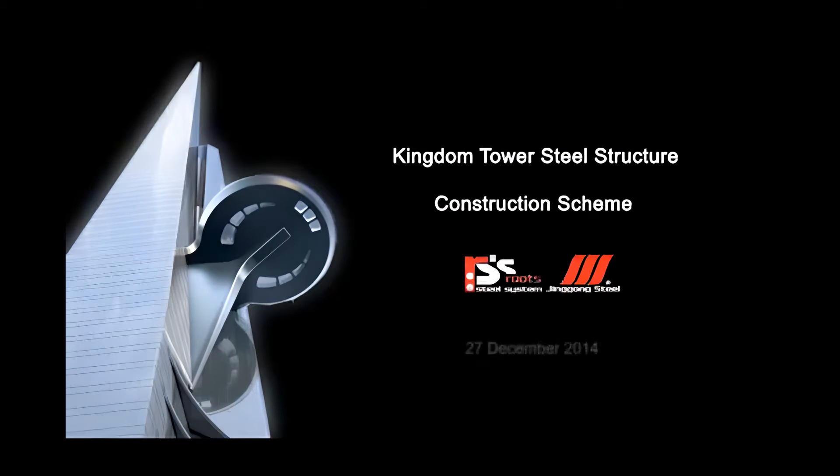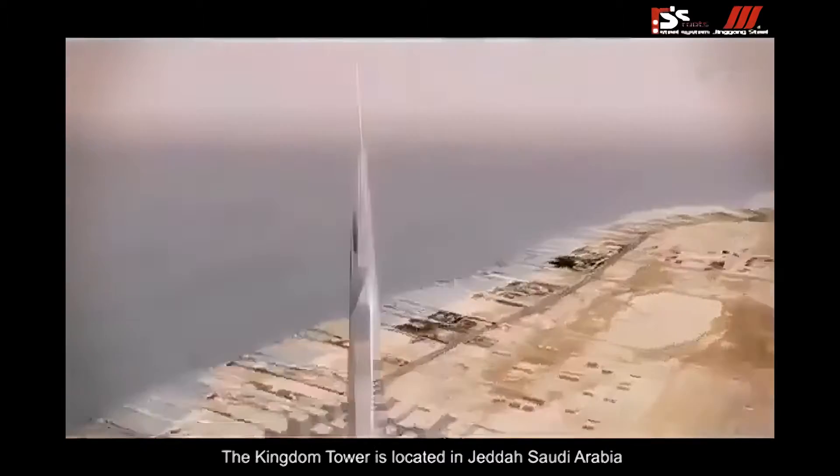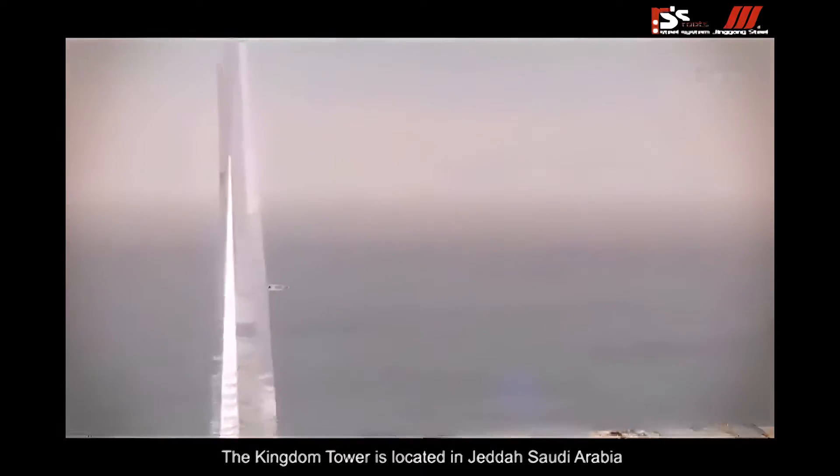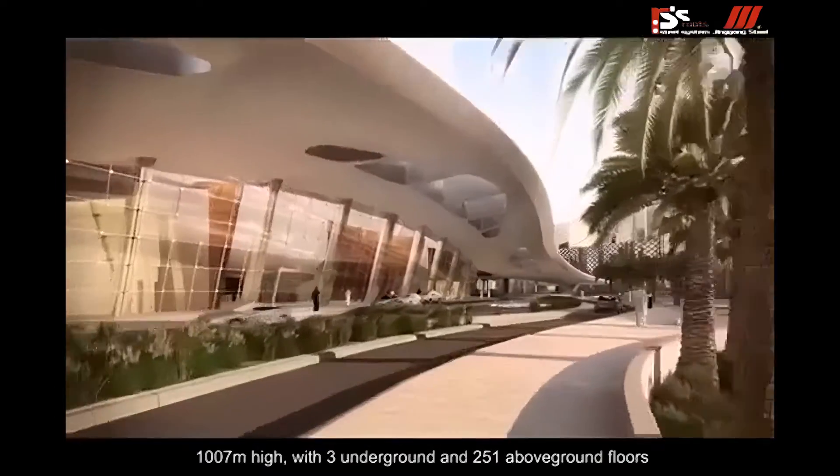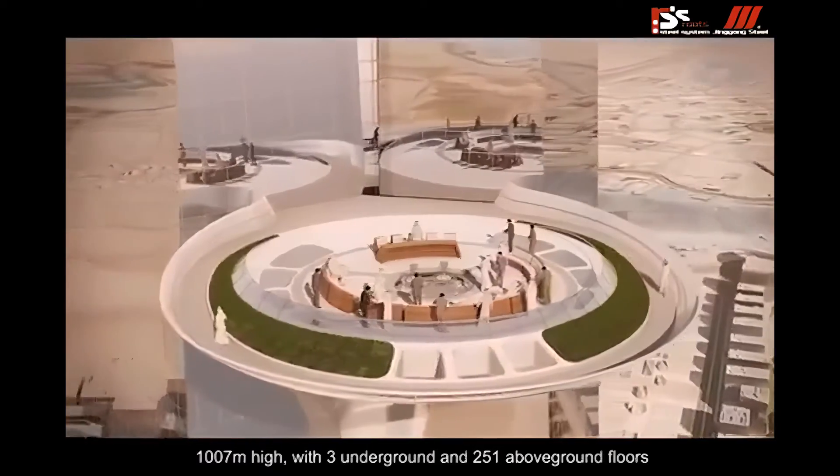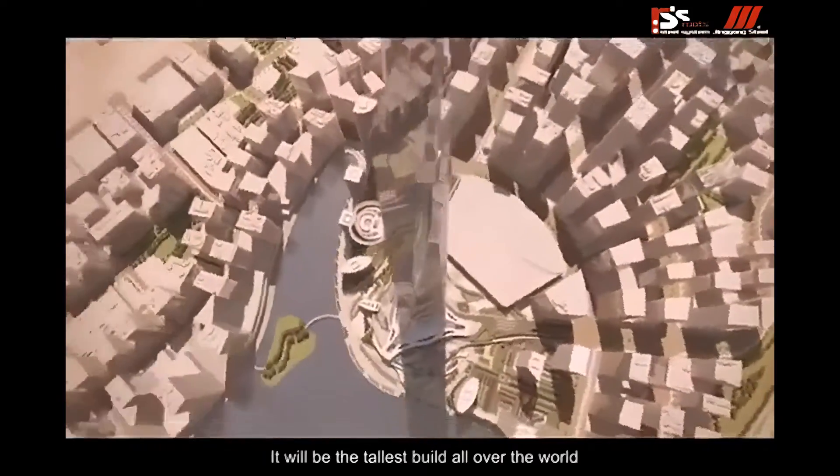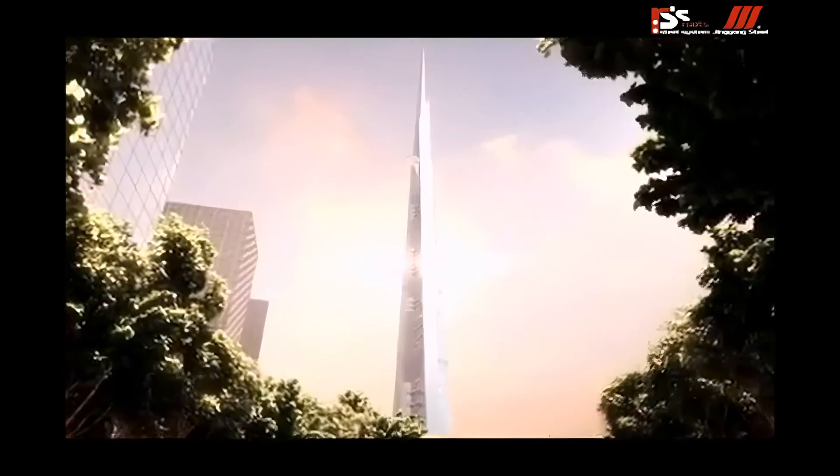Kingdom Tower Steel Structure Construction Scheme. The Kingdom Tower is located in Jeddah, Saudi Arabia, 1,007 meters high with 300 ground and 251 above ground floors. It will be the tallest building all over the world.